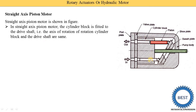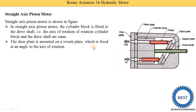Inside this cylinder block two holes are shown here, with pistons mounted inside. Depending on requirements, eight to twelve holes and pistons are provided in a cylinder block. The shoe plate is mounted on a swash plate which is fixed at an angle to the axis of rotation. The piston is connected with the shoe plate by using a ball joint or spherical joint, and the shoe plate is connected with the swash plate, installed on the driven shaft.